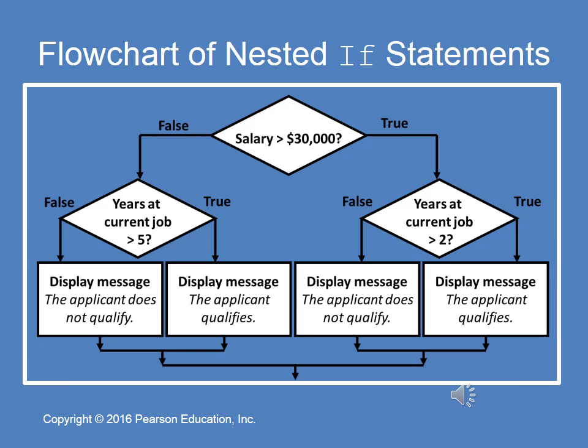Here's a flowchart of the nested if statements. The outer if-then-else evaluates salary > $30,000. If true, it drops down into the inner if-then-else evaluating years on the job > 2. If the outer if-then-else is false, you drop down to the second nested if evaluating years on job > 5. I do a detailed explanation of this with all the code in the video for Tutorial 4-4.